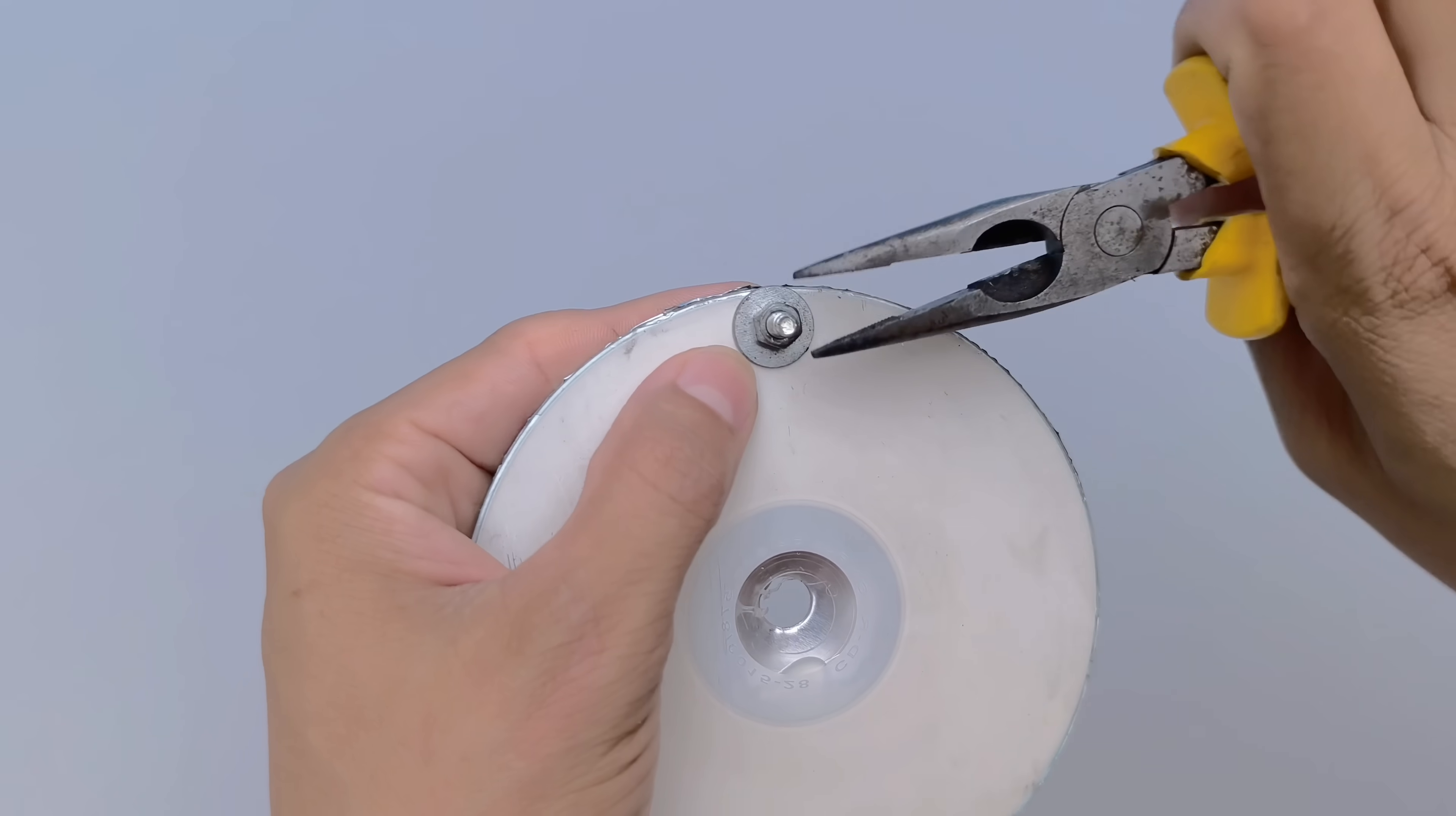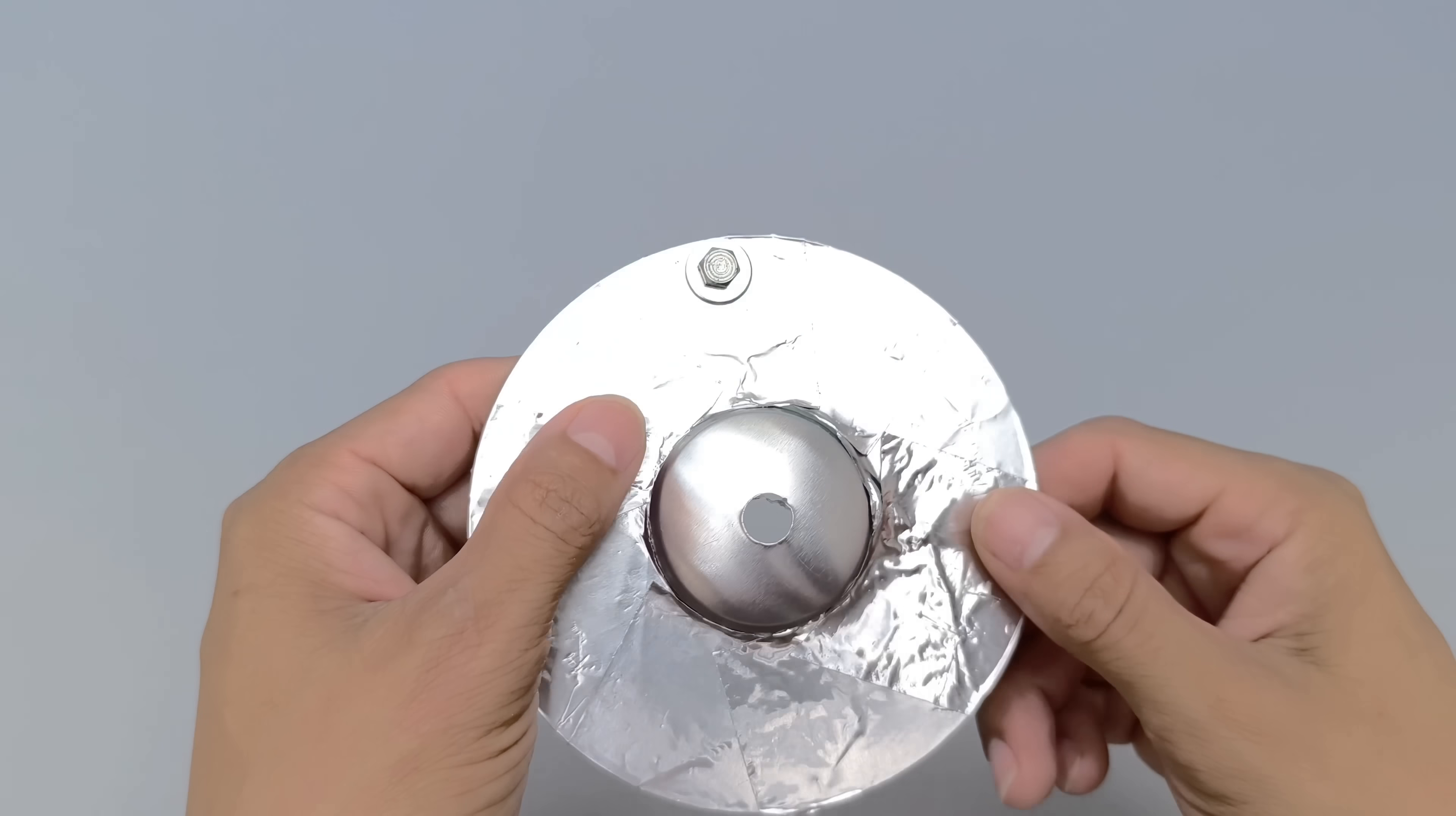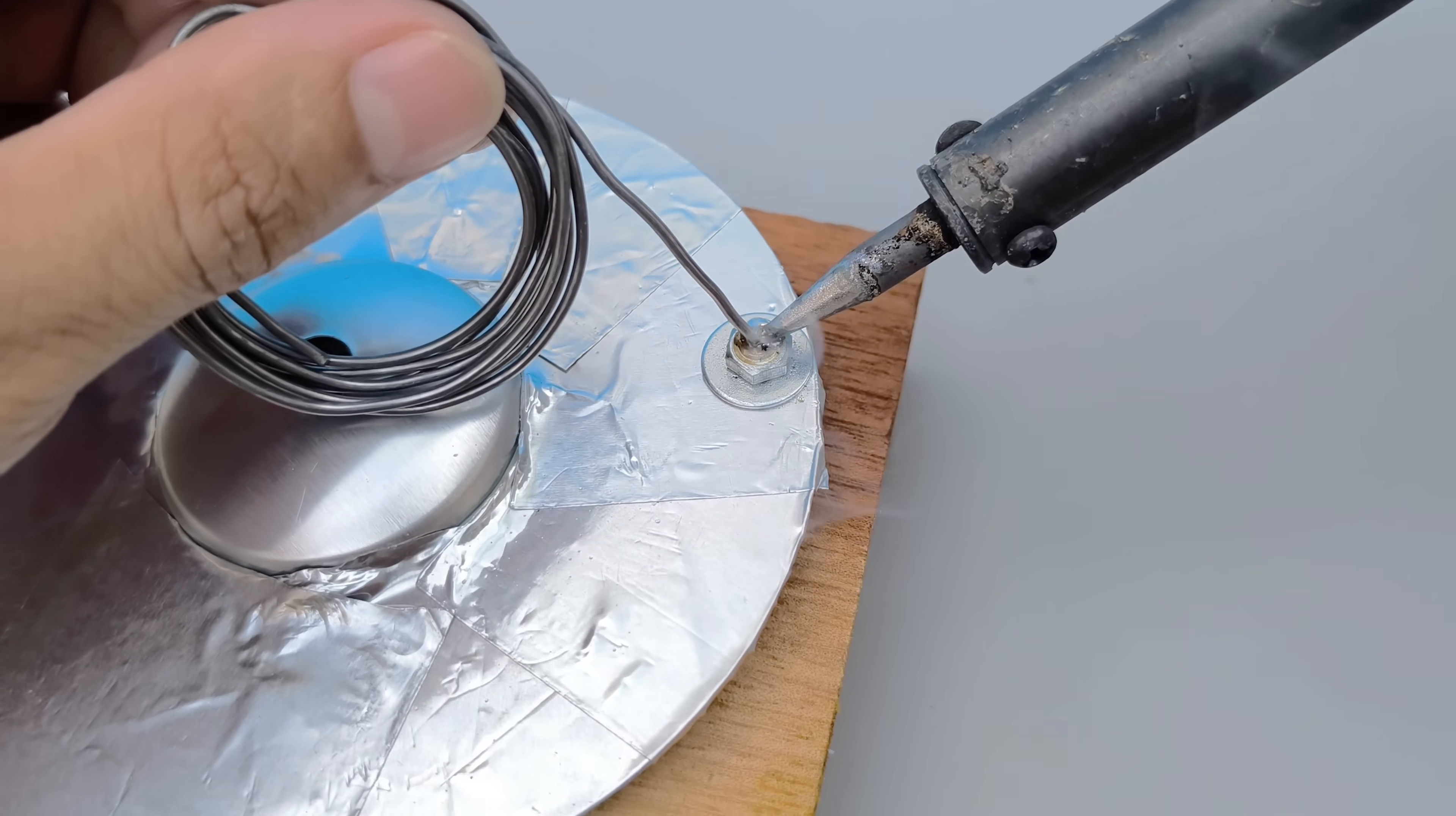To ensure a firm and secure hold, use an appropriate wrench, or if you don't have one, even pliers can do the job well. Finally, I apply a small spot of solder to the screw.